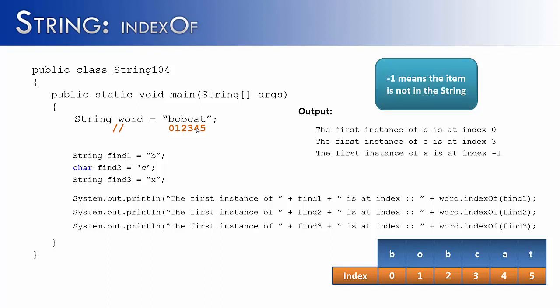What it's going to say is the first instance of X is at index negative 1. And if you get a negative 1, it simply means that what you're searching for is not inside of the string.